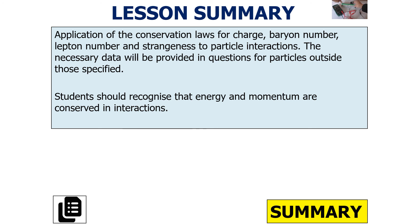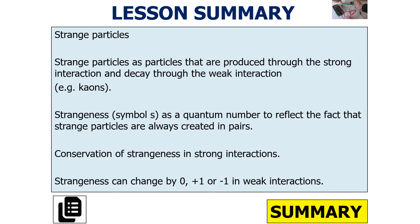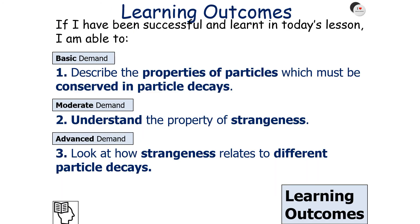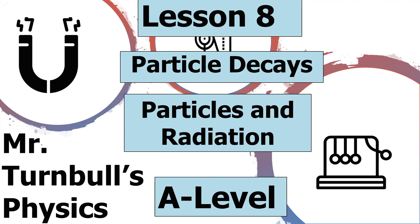In this lesson, we can understand the application of conservation laws for charge, baryon number, lepton number, and strangeness to particle interactions, and recognise that energy and momentum are also conserved. Strange particles are particles produced through the strong interaction and decay through the weak interaction — kaons. Strangeness is a quantum number reflecting the fact that strange particles are always created in pairs, with strangeness conserved in strong interactions but able to change by zero, plus one, or minus one in weak interactions. I hope you've enjoyed today's lesson on particle decays, part of the particles and radiation topic in AQA A-level physics. Thank you very much for listening, and have a lovely day.